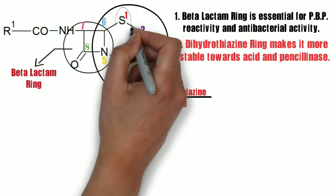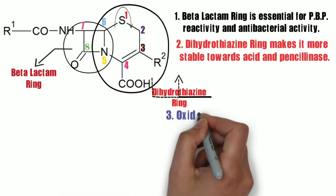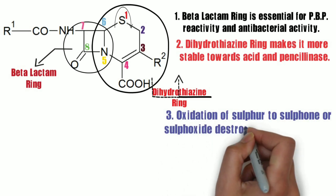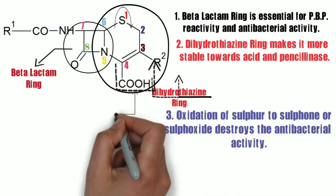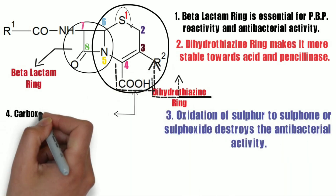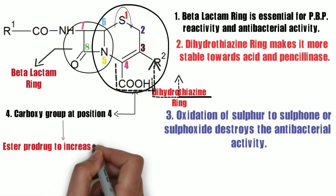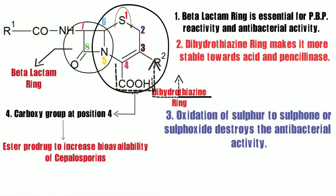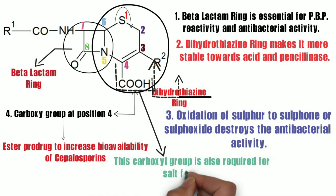If we see the sulfur atom at the first position, oxidizing it to sulfone or sulfoxide will destroy the antibacterial activity. At the fourth position, the carboxylic group has been converted to an ester prodrug to increase the bioavailability of cephalosporins. This carboxylic group is also required for salt formation.